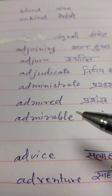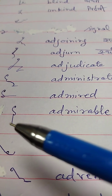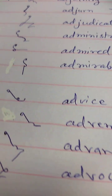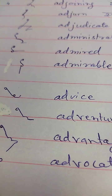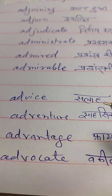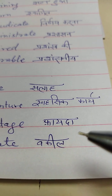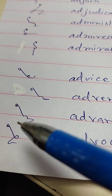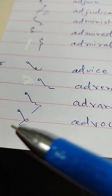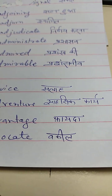Admired — prashansa ki. Admirable — prashansani. Advice — salah. Adventure — sahasik karay. Advantage — fajda. Advocate — waqeel.